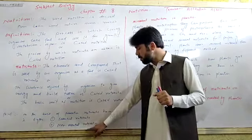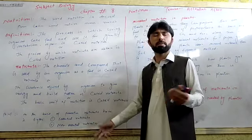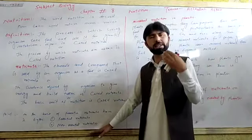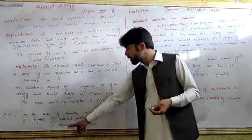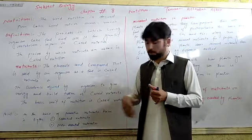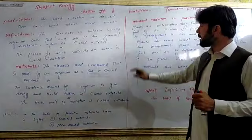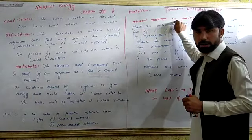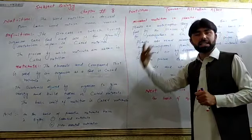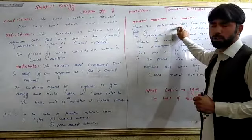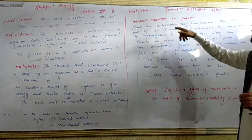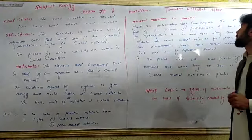Non-essential nutrients include lipids, protein, and other types of amino acids, as well as minerals. Plants are autotrophs, which means that they can prepare their own food by the process of photosynthesis.